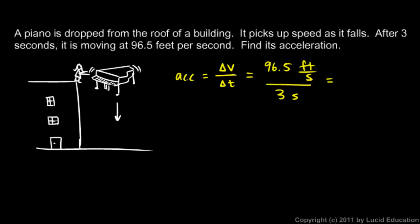And look at the units. We have feet per second and then another second in the denominator, and that works out to feet per second squared: 32.2 feet per second squared.